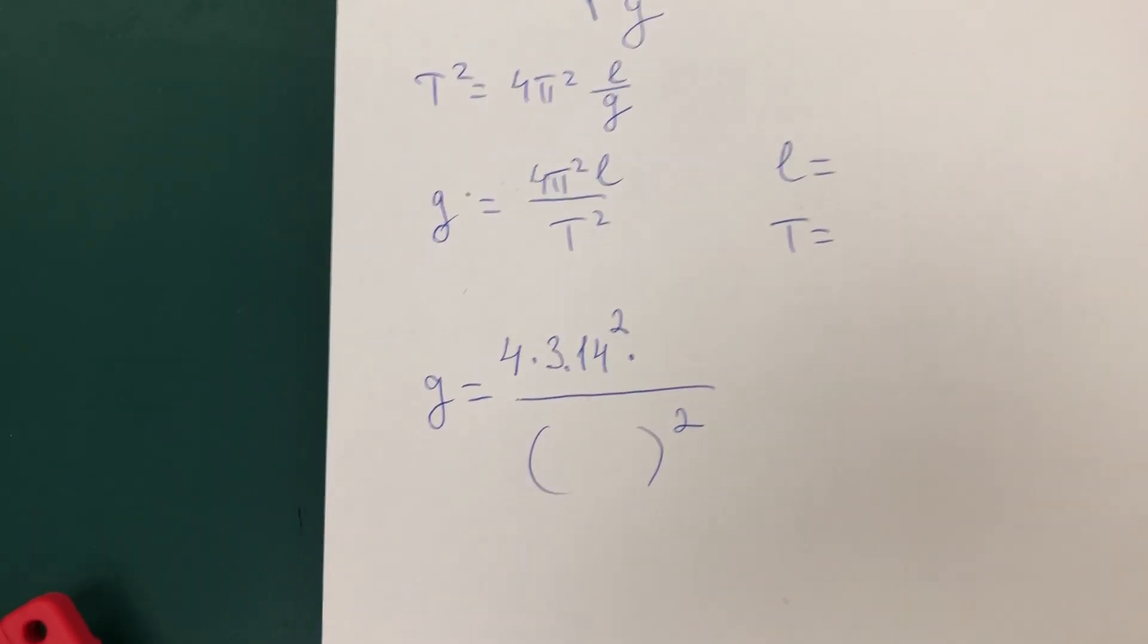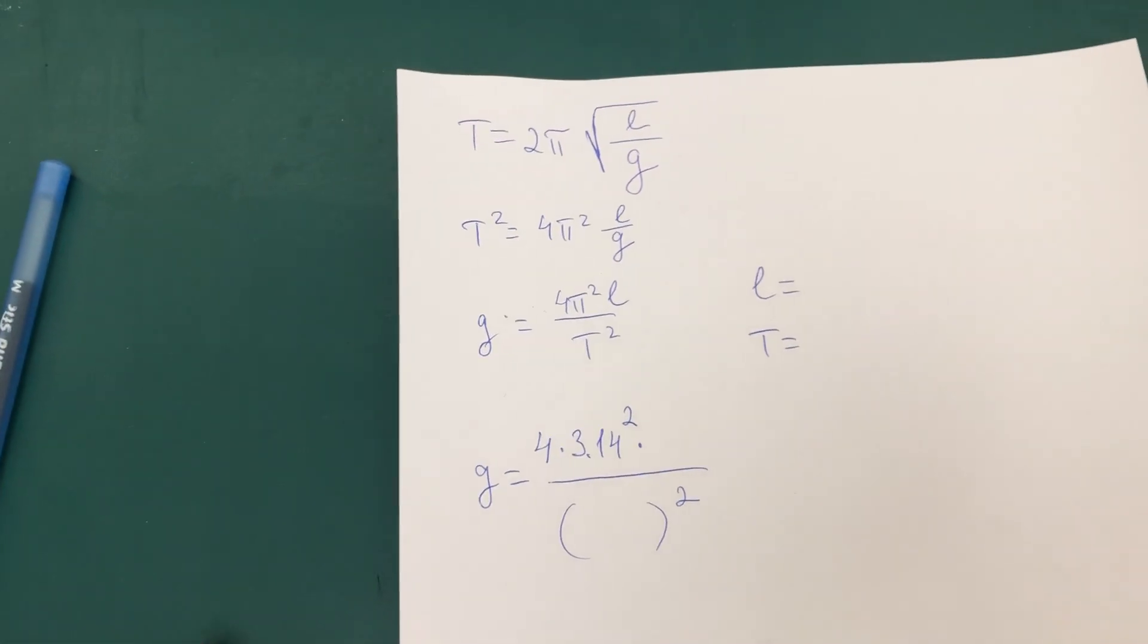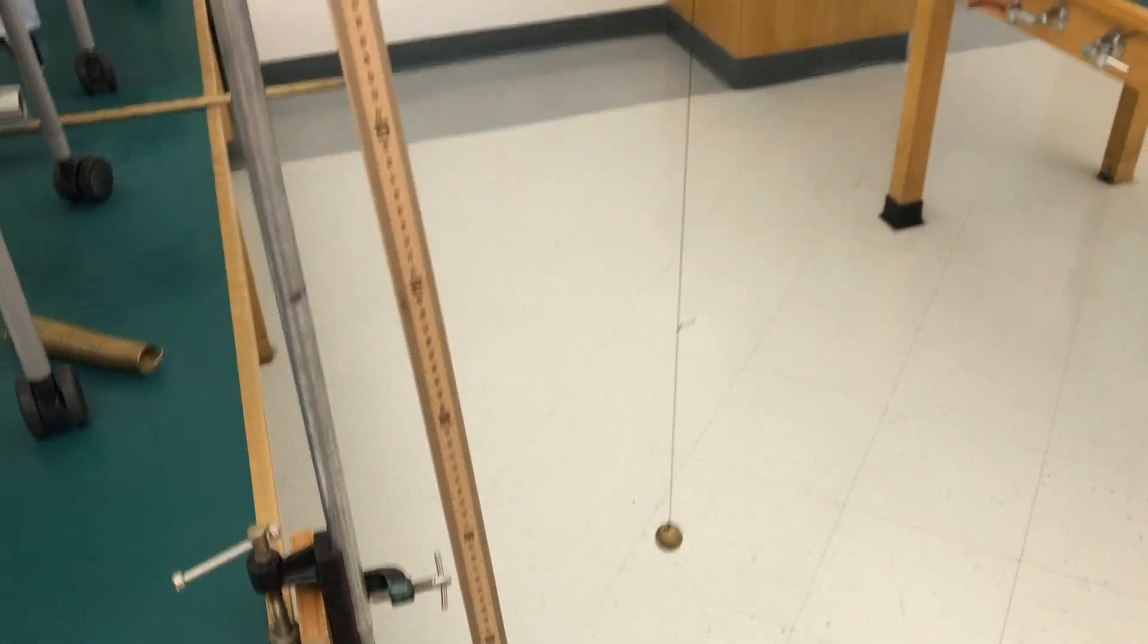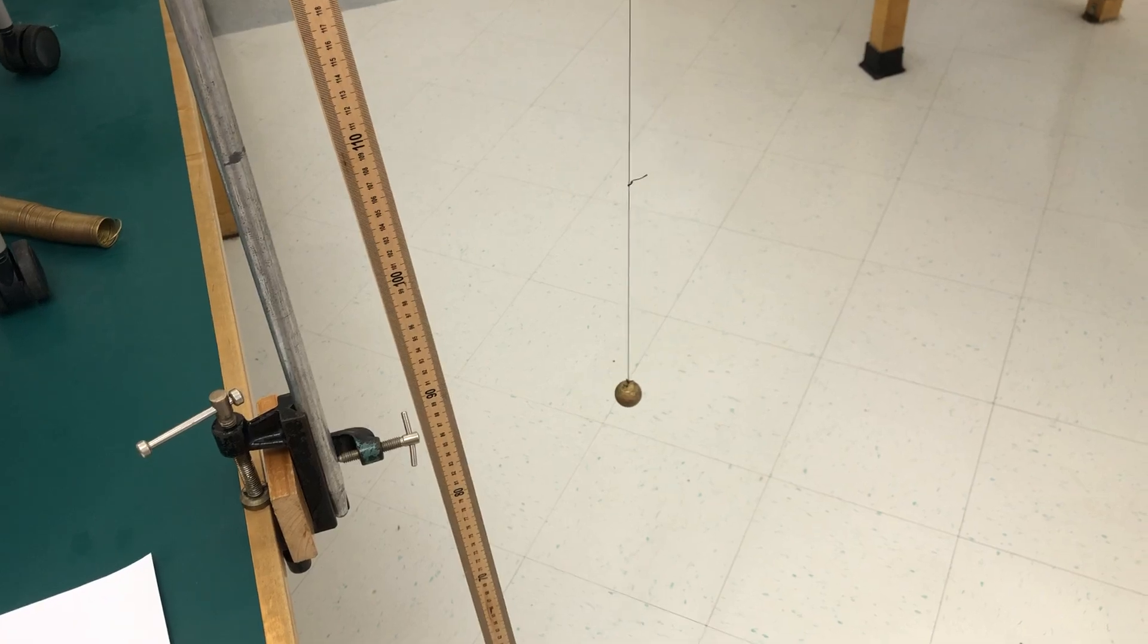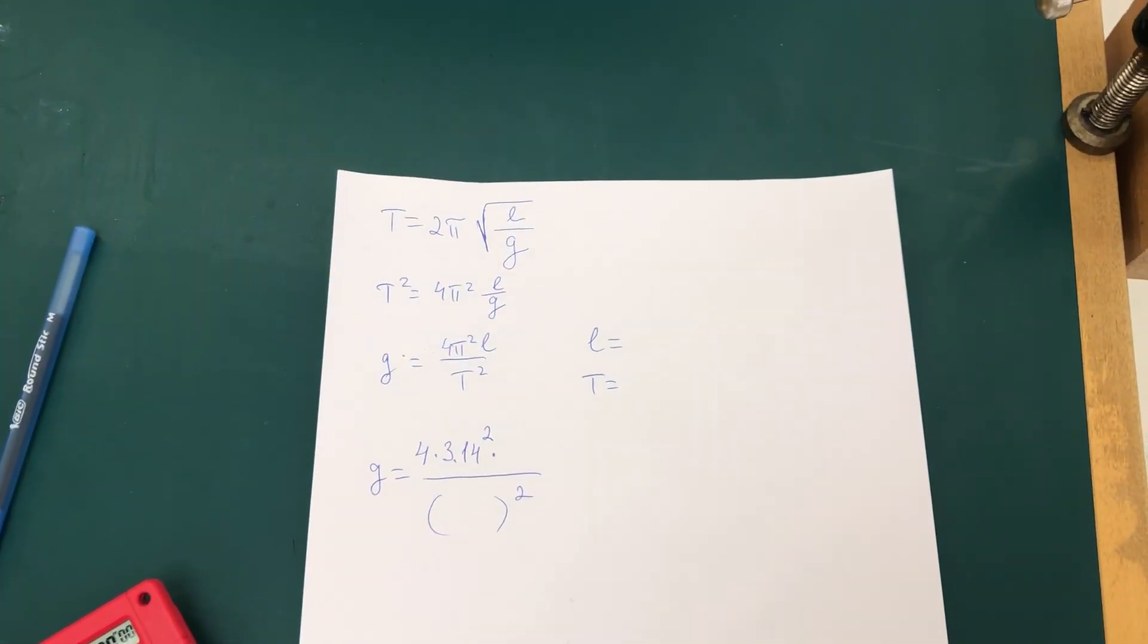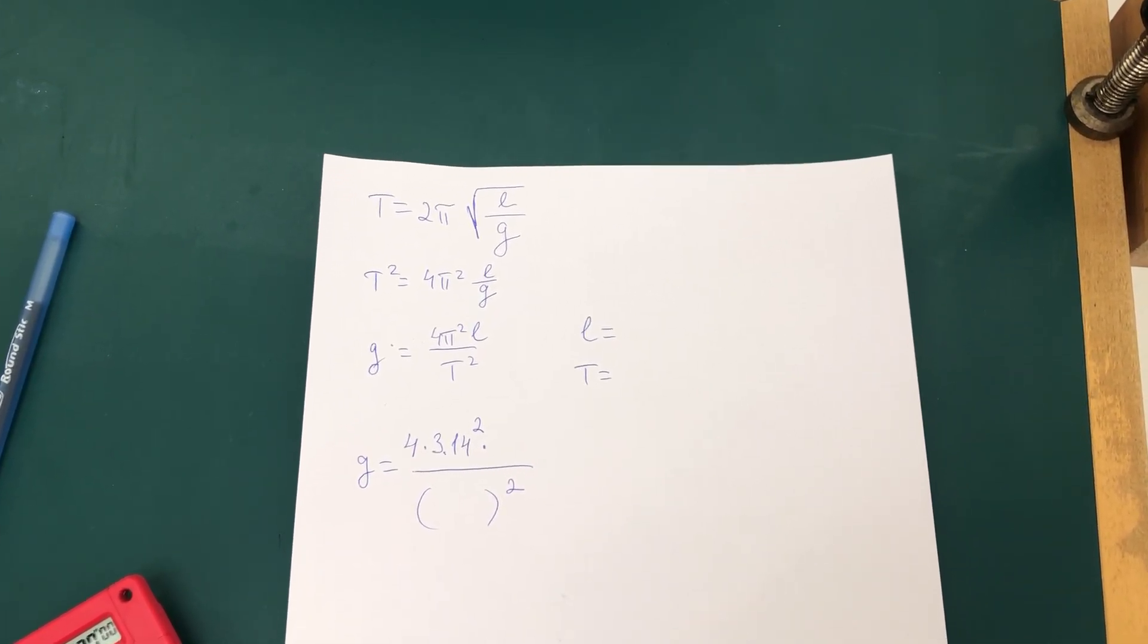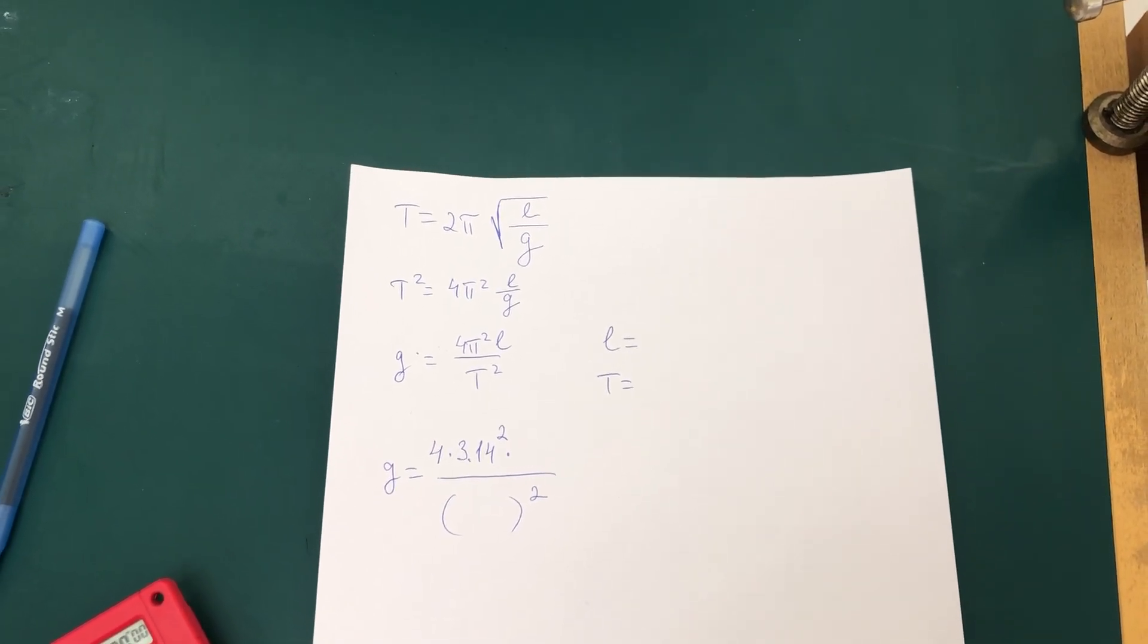For this particular planet, next time you land on say Mars or Venus, set up a simple pendulum, figure out the length which you can do with a ruler, count say 10 or 20 oscillations to figure out the period, and plug it into the formulas and you will get the freefall acceleration on that particular planet or an asteroid. The formula is universal, so it works for the whole universe.